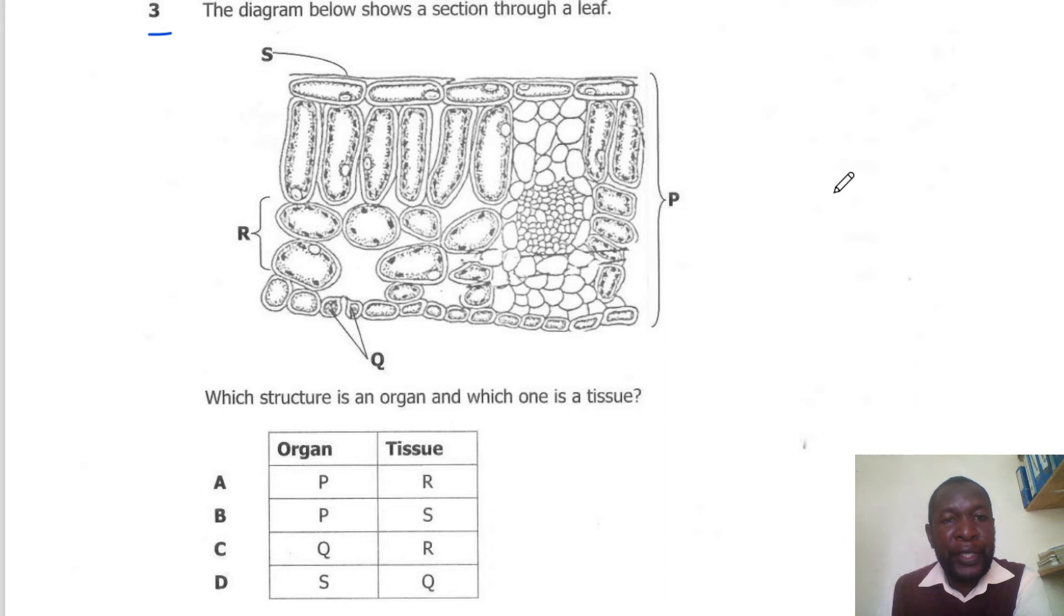Question 3. The diagram below shows a section of a leaf. Which structure is the organ and which one is the tissue? The organ here is the leaf itself and the tissue is the spongy layer. So the correct answer here is A.